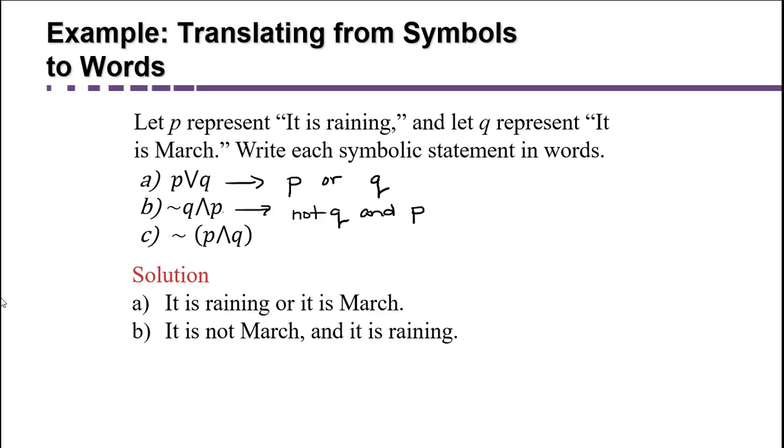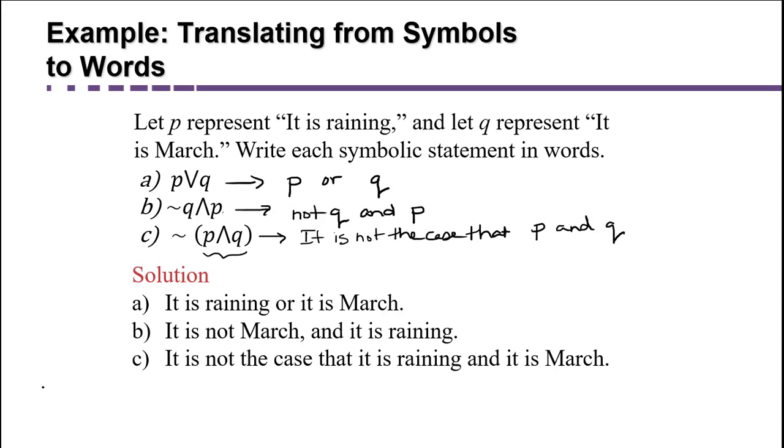Now for part C, this is an interesting one because the negation is out front of these parentheses here. So what that's telling you is you're negating the whole statement. So when you have that, we often translate it into it is not the case that, and then we'll say whatever the statement is. In this case, P and Q. It is not the case that P and Q happen. So it is not the case that it is raining and it is March. That would be one way you could indicate that.